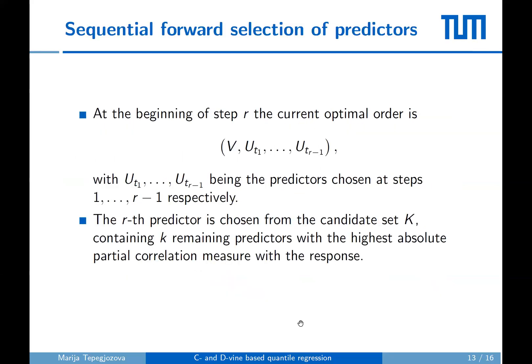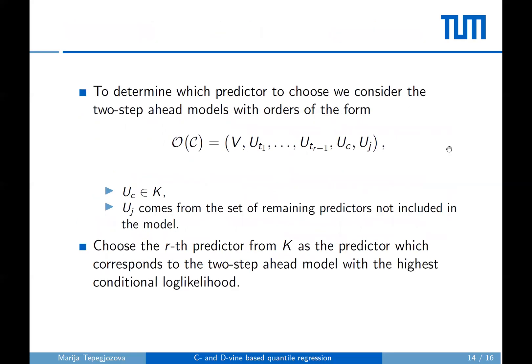Now, coming to the sequential forward selection procedure itself, we consider any given step R of the algorithm. At the beginning of step R, the current optimal order is composed of the response and the R-1 predictors chosen until the Rth step. Now, to choose the Rth predictor, we first conduct a preselection based on partial correlations. That is, we define a candidate set K, which contains K predictors with the highest absolute partial correlation measure with the response.